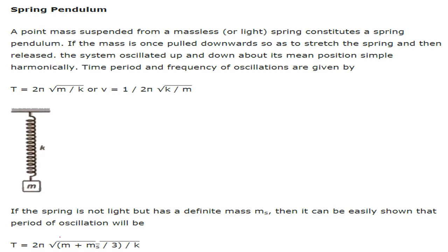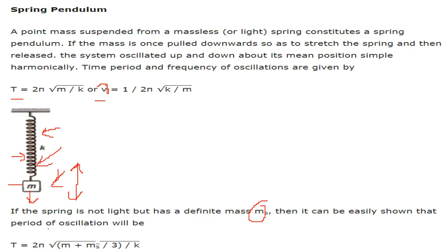Spring pendulum: a point mass suspended from a massless or light spring constitutes a spring pendulum. When the mass is pulled downward and released, the system oscillates up and down about its mean position in simple harmonic motion. The time period is T = 2π√(m/k) and the frequency is f = (1/2π)√(k/m). If the spring has mass mₛ, the period becomes T = 2π√((m + mₛ/3) / k).